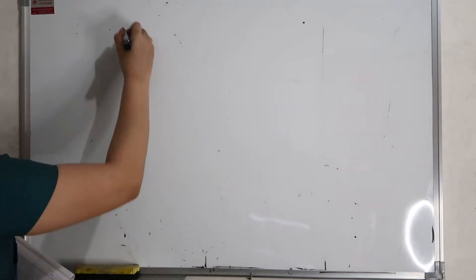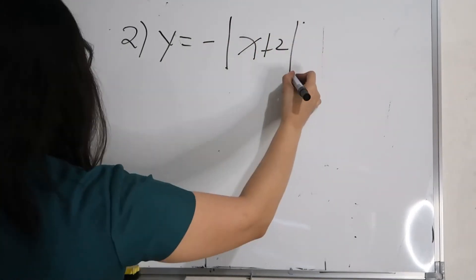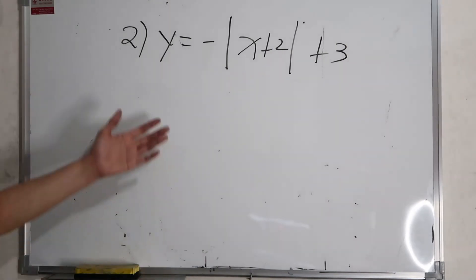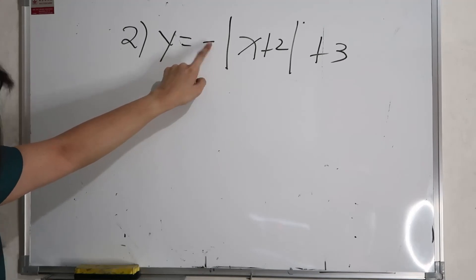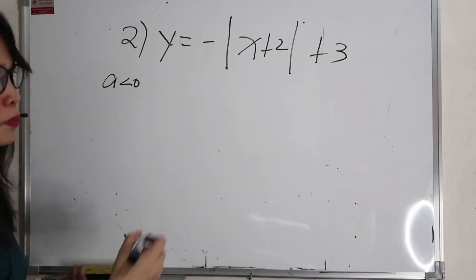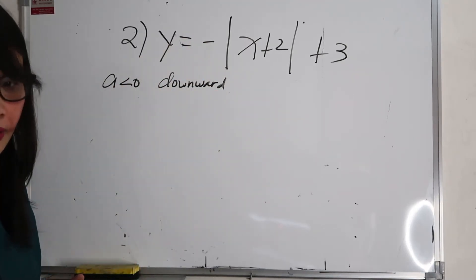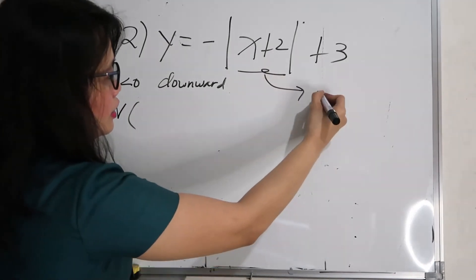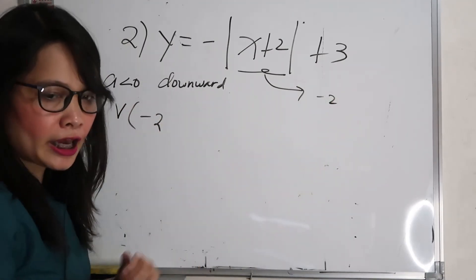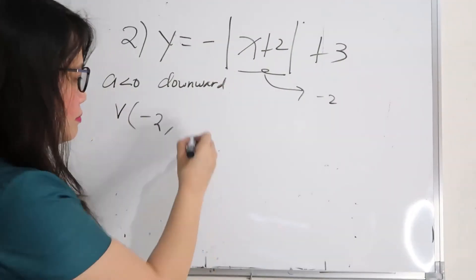Another example: y equals negative absolute value of (x plus 2) plus 3. Since the given is negative, a is less than 0, so it opens downward. For the vertex, h comes from the value of x inside the expression, which gives negative 2. So h equals negative 2.